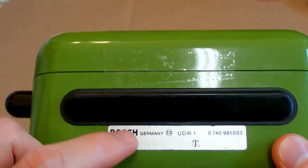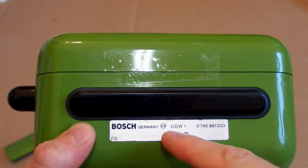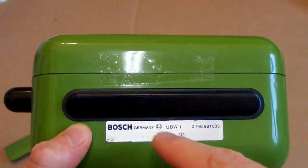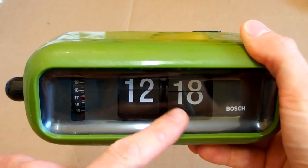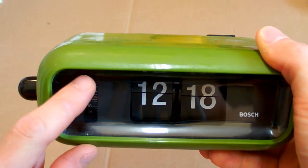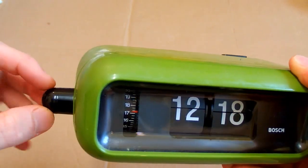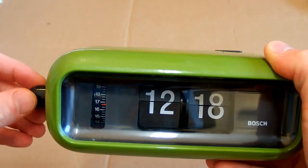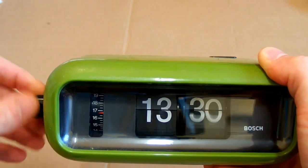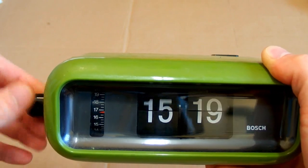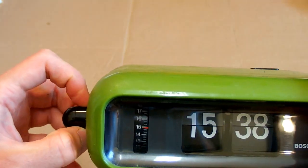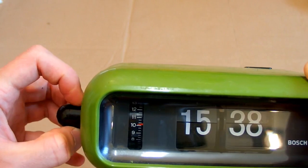It's made by Bosch in Germany and the type is UDW1. It's quite a simple clock with just a time display and alarm setting. This knob has two parts: one of them is setting the time in 24 hour mode as you can see, and the other part is setting the alarm like this.